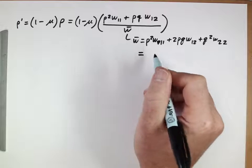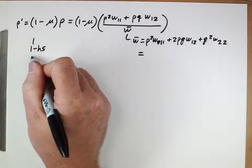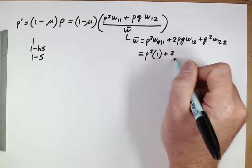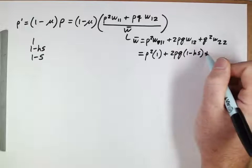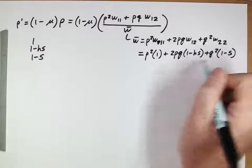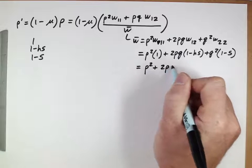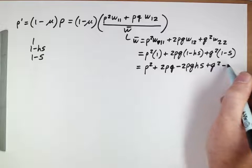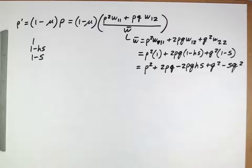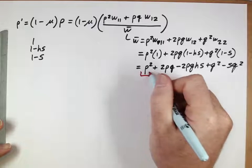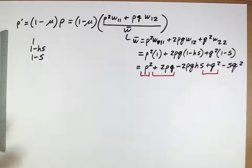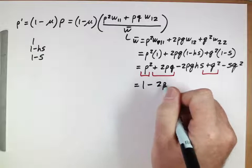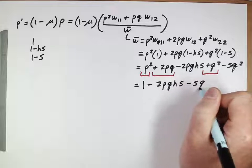And let's simplify this a little bit. One thing to note is that we have w̄ down there, so we're going to remind ourselves of what this is. This was p²w₁₁ plus 2pqw₁₂ plus q²w₂₂. For our fitnesses that we had from before, remember our fitnesses were 1, 1-hs, 1-s. So p² times 1 plus 2pq times 1-hs plus q² times 1-s. p² plus 2pq minus 2pqhs plus q² minus sq². And we can simplify here because we can see that this and this and this all add up to 1.